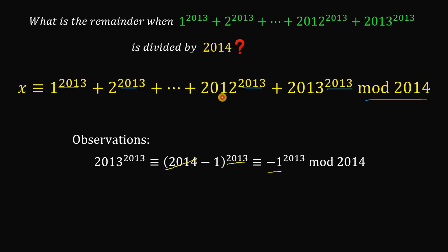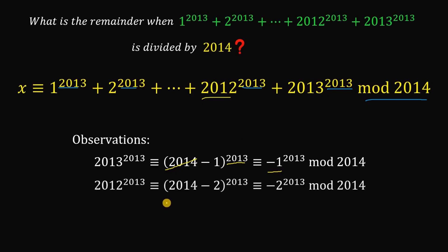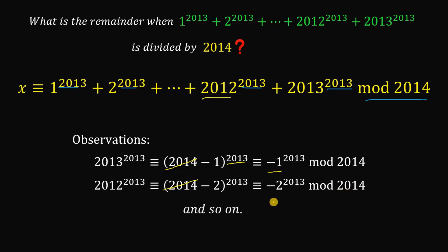Similarly, 2012 can be rewritten as (2014 minus 2). Again, 2014 mod 2014 is just 0 mod 2014, so what's left is (−2) raised to the power of 2013 mod 2014, and so on and so forth.